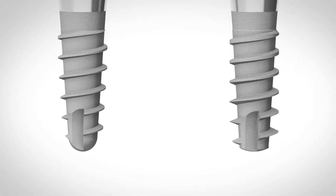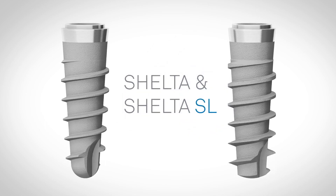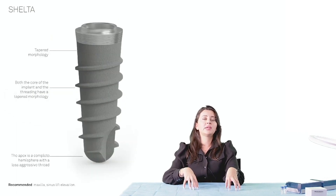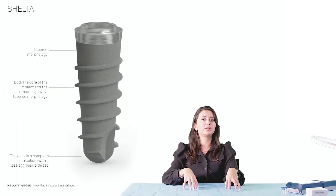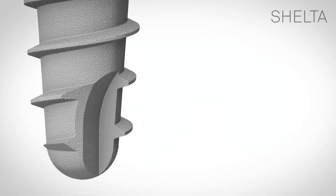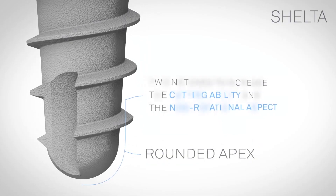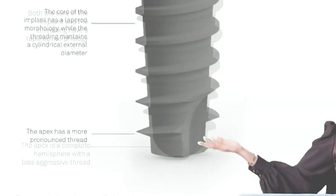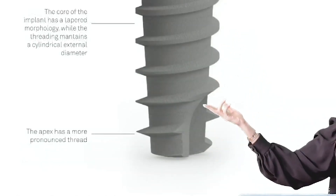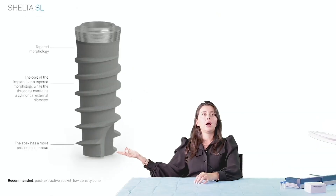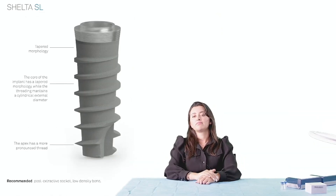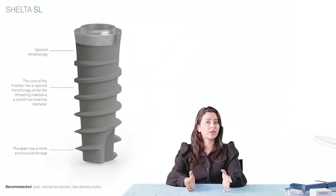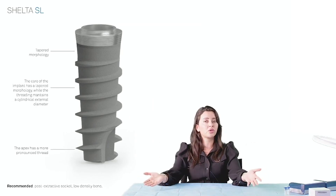Shelter is a tapered system. It has two different designs within the same system: one is called Shelter and the other is called Shelter SL. Shelter has a rounded apex, ideal for sinus lifts. The Shelter SL has a more progressive thread, ideal for maxillary cases, softer bone, and immediates. That is not to say that you can't use both implants in all different surgical cases, but they have specific features that aid in specific types of surgeries.